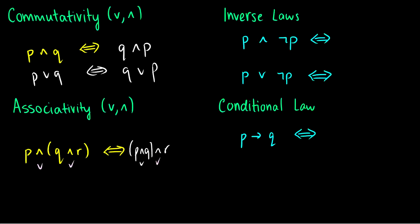Inverse laws: p AND NOT p is a contradiction — this is false. p OR NOT p is a tautology — this is true. We proved both of these in the last video.